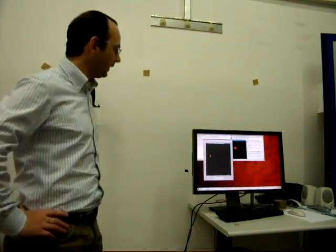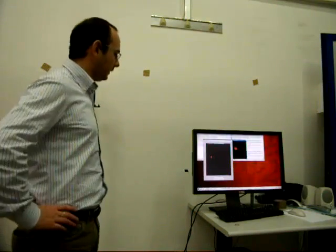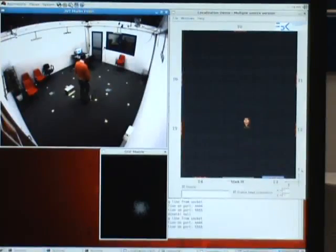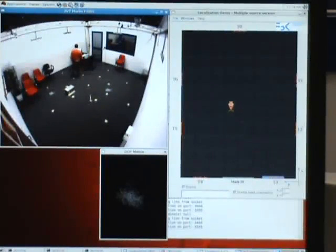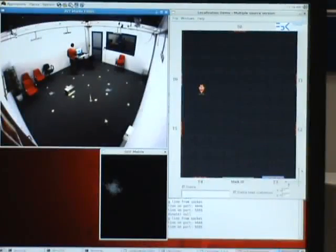Now we see what happens when two sources are active in the room. Now the system is tracking my position using particles. Now I move in this corner of the room and activate this loudspeaker that will act as an interferer.